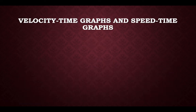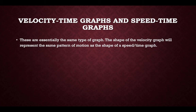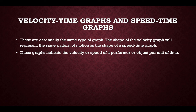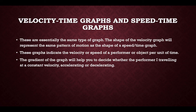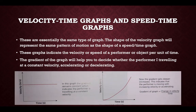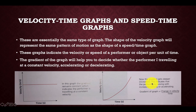Velocity-time graphs and speed-time graphs are essentially the same type of graph. The shape indicates the velocity or speed of a performer per unit of time. The gradient helps determine whether the performer is travelling at constant velocity, accelerating or decelerating. A constant gradient indicates constant velocity, while a steeper gradient indicates increased velocity or acceleration. The gradient equals the change in velocity divided by the time.